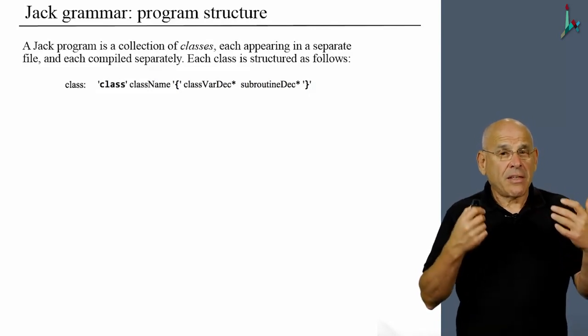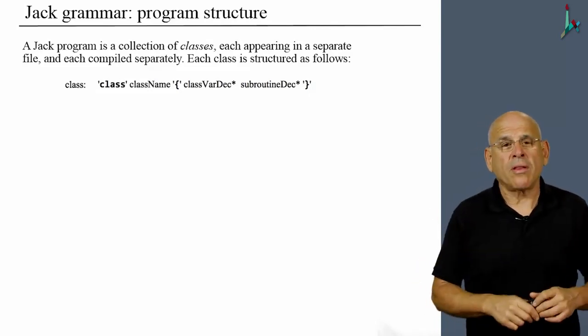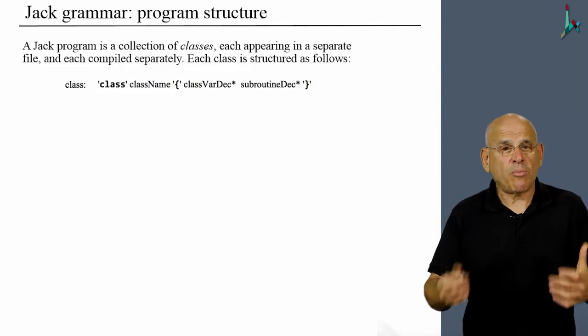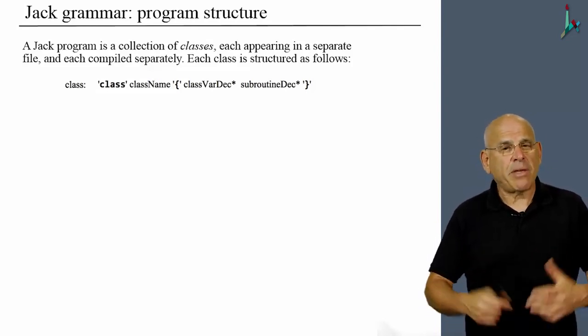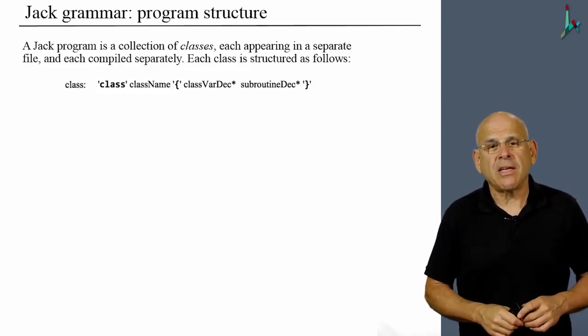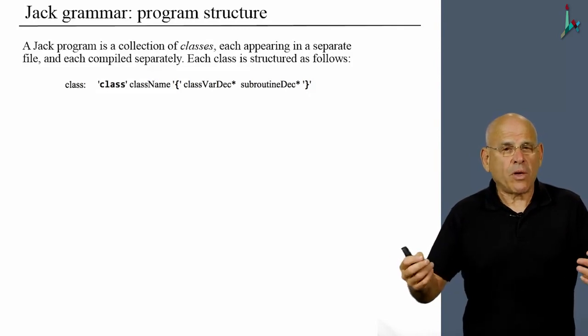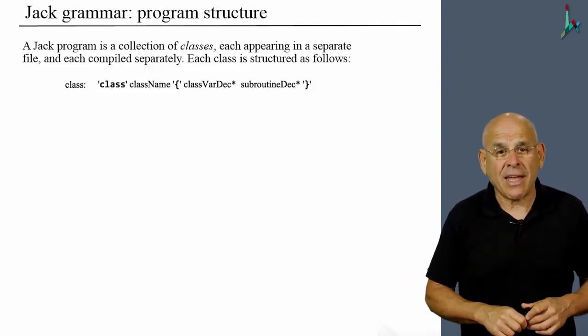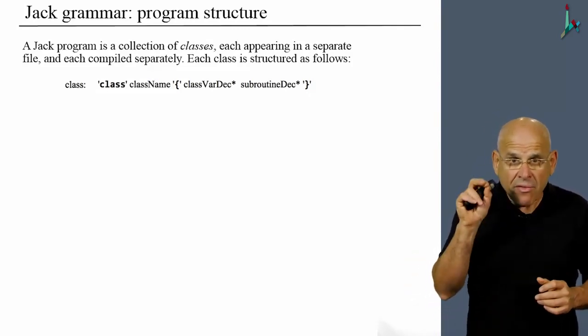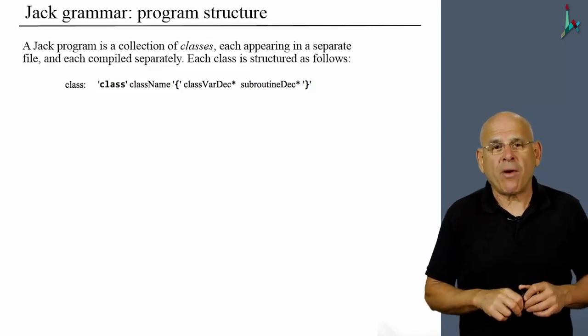And the structure of each of these classes is as follows. And what you see here is a non-terminal rule that describes what it takes to be a class. So a class begins with a keyword class. Then we have a class name, which as you will see later on is an identifier.